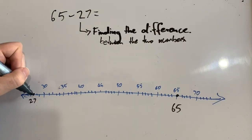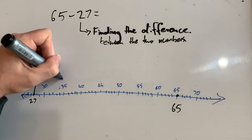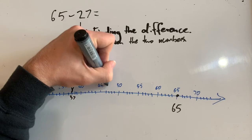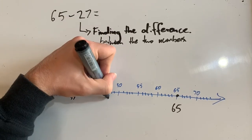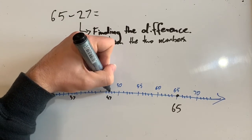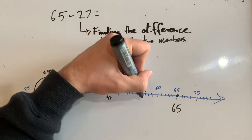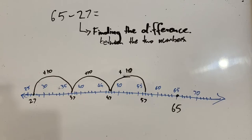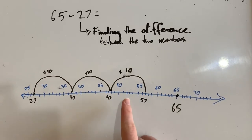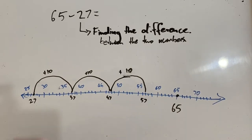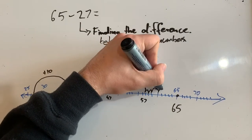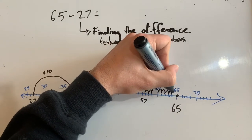To do that, I'm going to do some jumping. So I'm going from 27, I'm going to add 10 to get to 37, then another 10 to get to 47, then another 10 to get to 57. Now I could try to add another 10, but that's going to end up with me being more than 65. So I'm going to make some smaller jumps — jumps of units instead of tens — to get to 65: one, two, three, four, five, six, seven, eight.